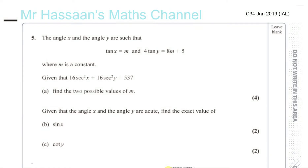Now we have question number 5 from the C4 January 2019 International A-Level paper. It's a trick question. The angle X and angle Y are such that tan X equals M and 4 tan Y equals 8M plus 5, where M is a constant. Given that 16 sec squared X plus 16 sec squared Y equals 537, find the two possible values of M.